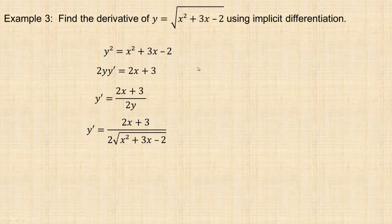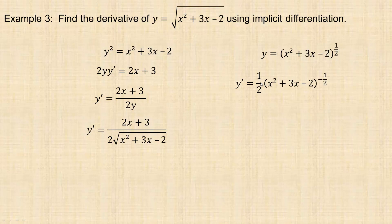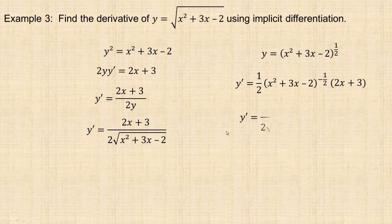Now using plain chain rule for comparison: I write the radical as (x squared plus 3x minus 2) to the power of one half. Applying chain rule: bring the half down in front, keep the inside function, subtract 1 from the exponent to get negative one half, then multiply by the derivative of the inside — 2x plus 3. This is equivalent: 1 times (2x plus 3) on top, the 2 from the half is in the denominator, and the negative one half power means the root goes to the denominator. So they're exactly the same — just two different ways to reach the same derivative.